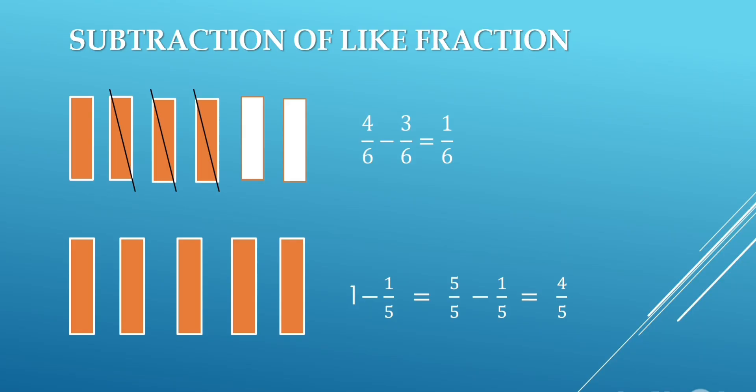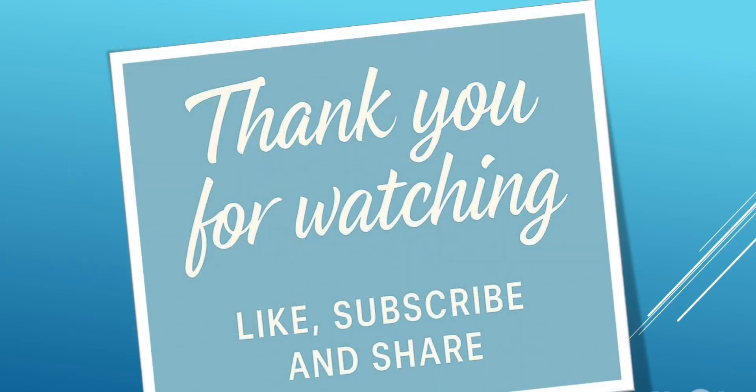Next: 1 minus 1 upon 5. In this question, we need 5 as the denominator. We will write one whole as 5 upon 5, so the question becomes 5 upon 5 minus 1 upon 5. To subtract 1 upon 5, we will cut one shaded part. Now 4 shaded parts are left, so the answer is 4 upon 5. I hope you understood the concepts taught in this video.